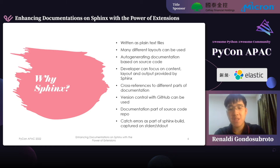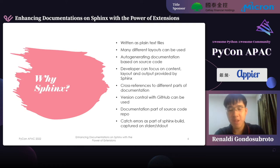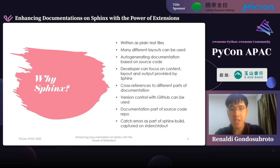Documentation can also be part of the source code repo, so it can be shared with anyone who accesses the repo, not only used locally. It also provides cross-references to different parts of the documentation and version control with GitHub, keeping it up to date with modern practices. Finally, you can also catch errors as part of the Sphinx build command — you can capture them on standard error or standard out, making it easy to log and debug errors.